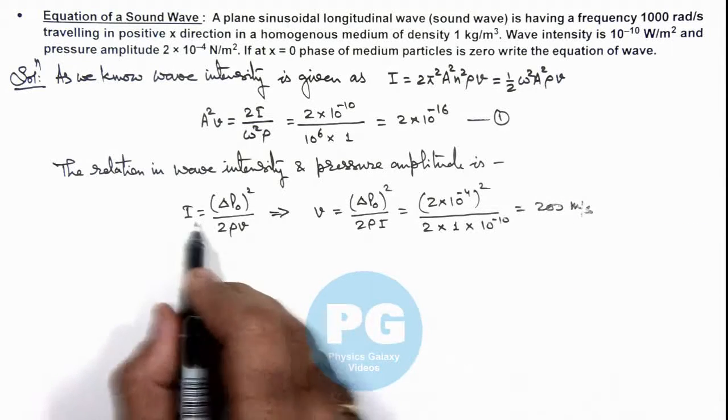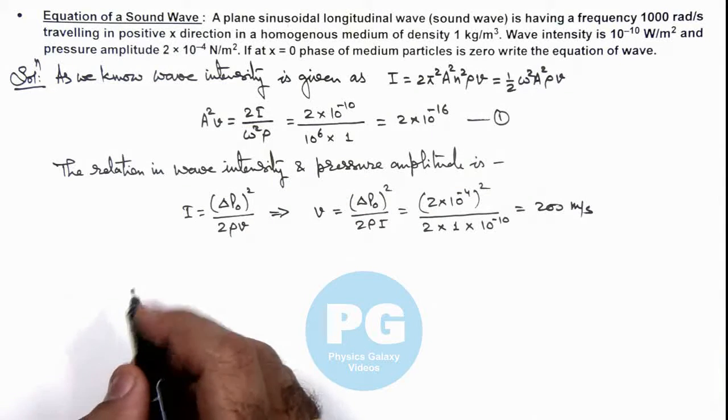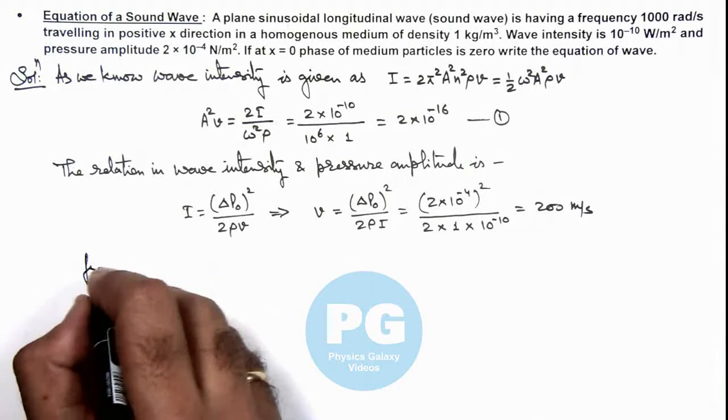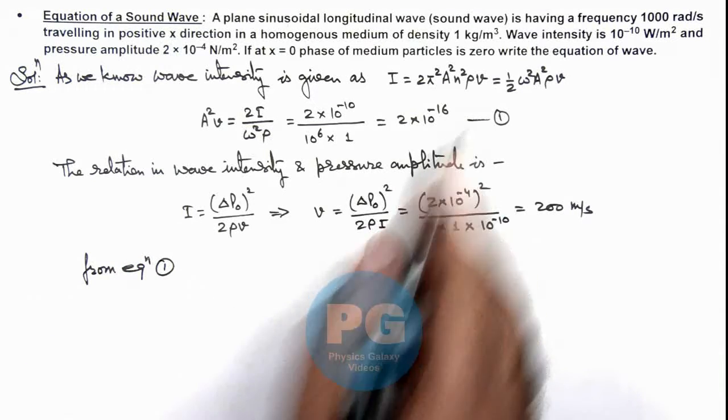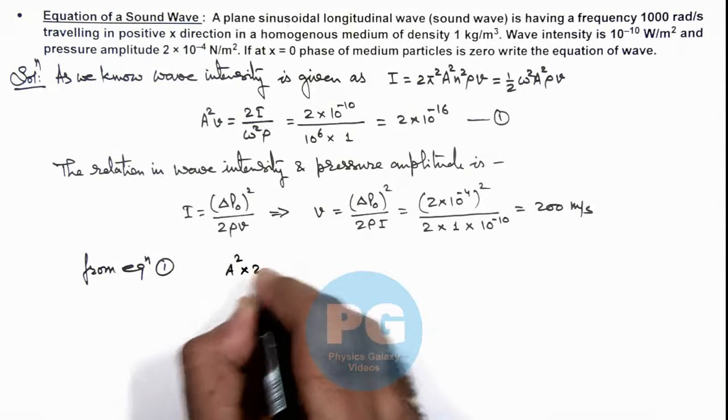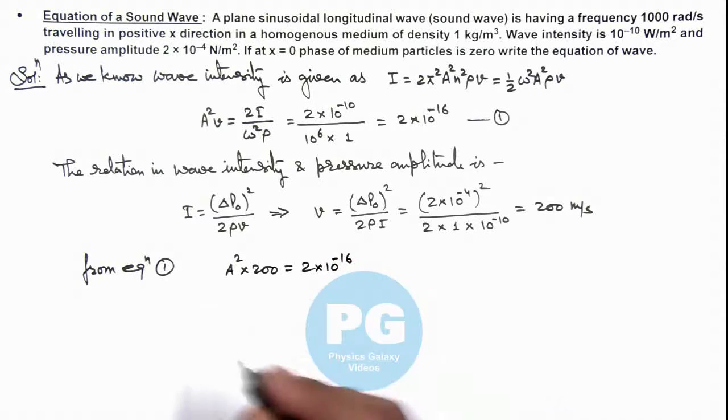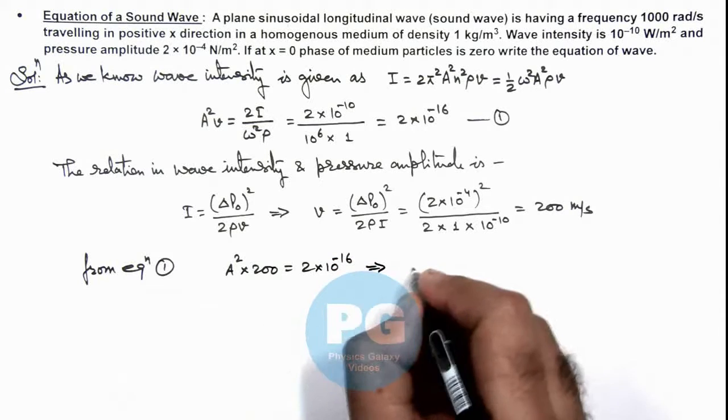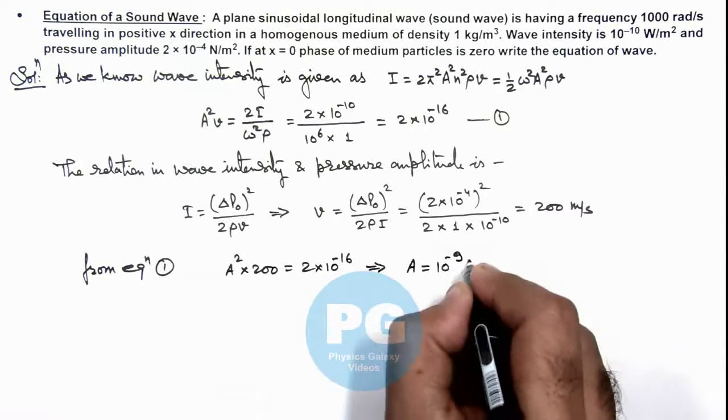As we have got the value of wave velocity we can calculate the wave amplitude. Here from equation 1 we can write, A² multiplied by 200 is equal to 2 into 10 to power minus 16, which will result the value of amplitude to be equal to 10 to power minus 9 meter.